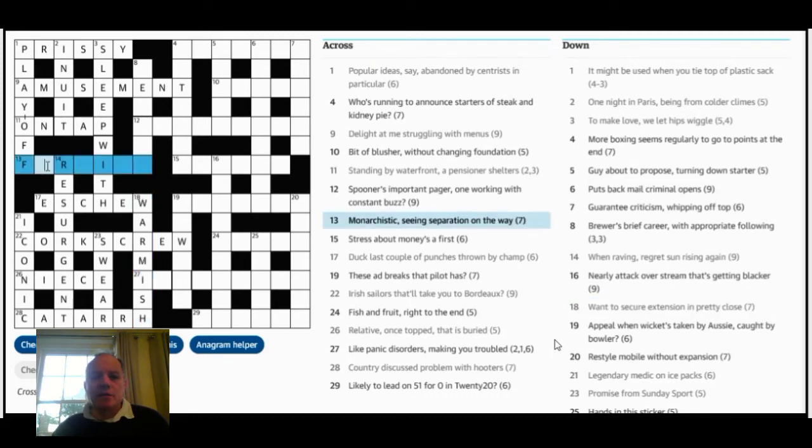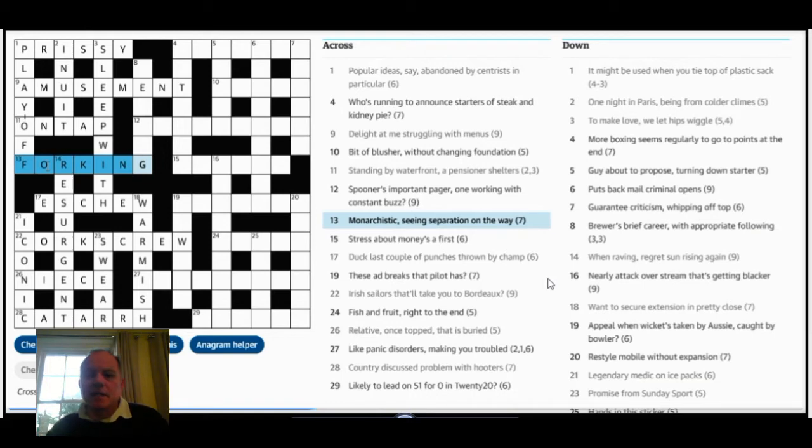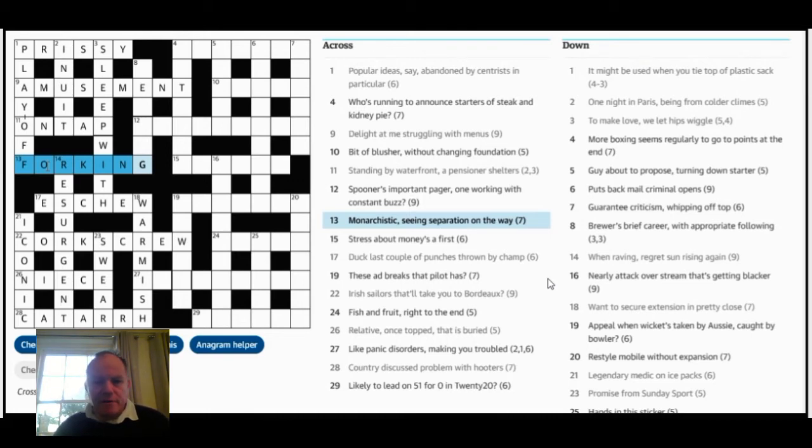13 across, very nice clue. You can just see me filling it in there. I finished it off. Monarchistic seeing separation on the way. Now most solvers seeing that like myself would be thinking monarchistic must be the definition. It's kind of a long word, it's saying something very specific, it's at the beginning of the clue. And they'd be thinking of royalist or some Yorkist, something along those lines. Monarchistic seeing separation on the way. But in fact that's the wordplay which breaks down as for king. So wordplay of one word in the clue leading to two words in the answer is very cleverly done. Separation on the way is a sort of cryptically defining way of giving forking, and that's very neat.